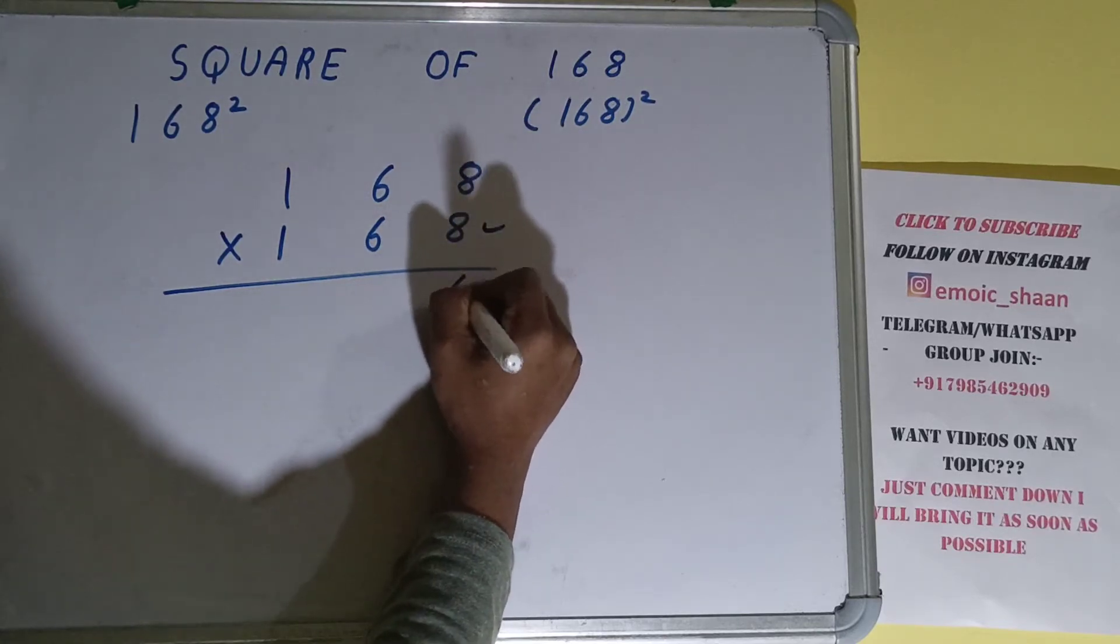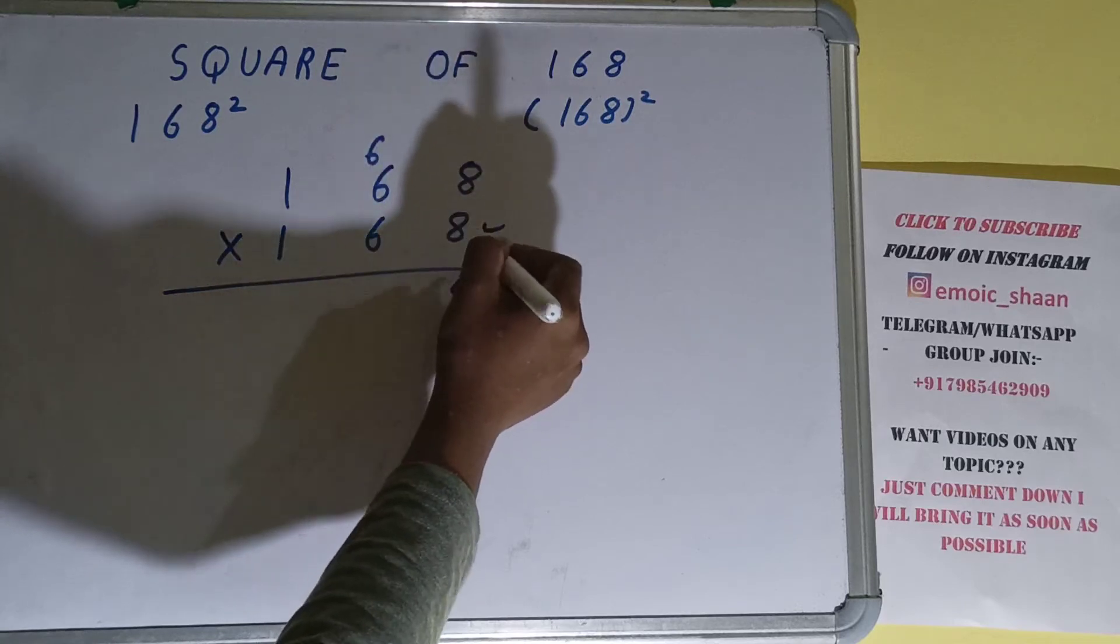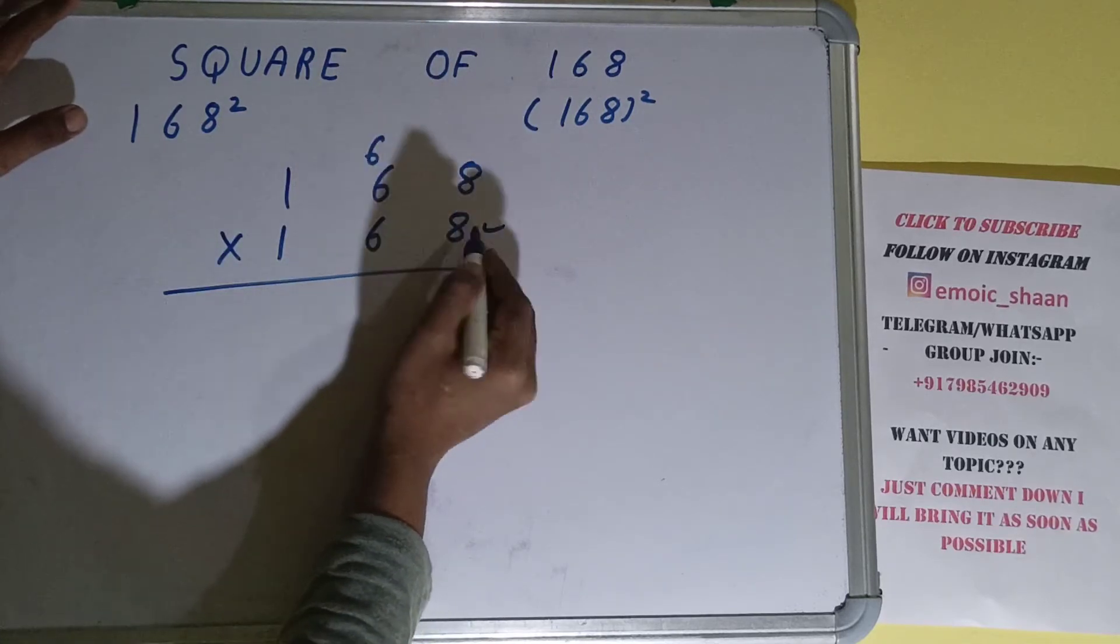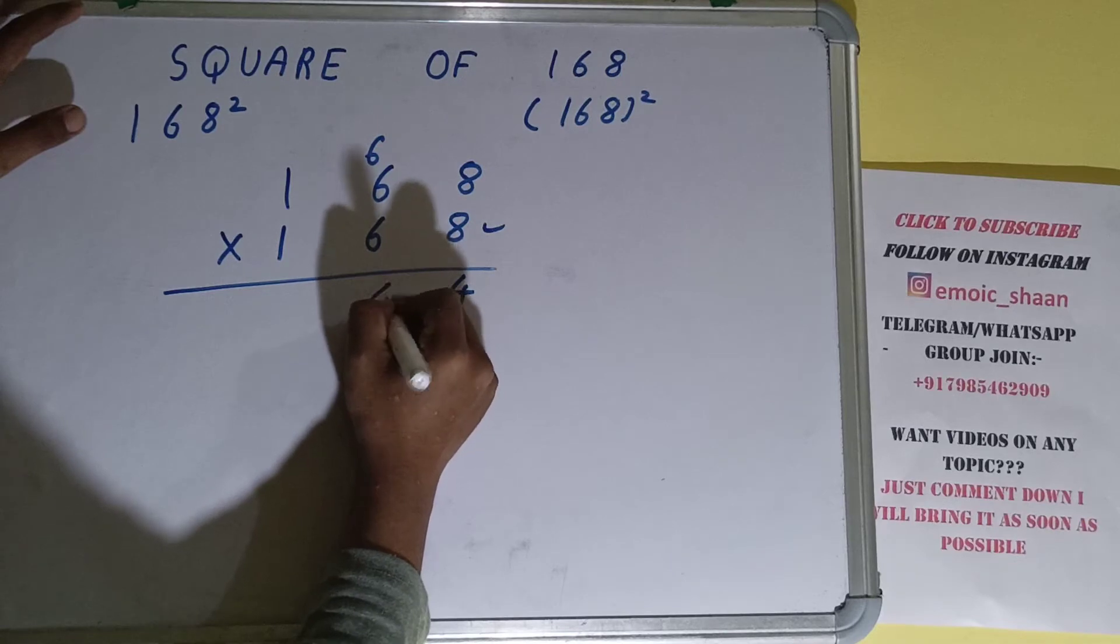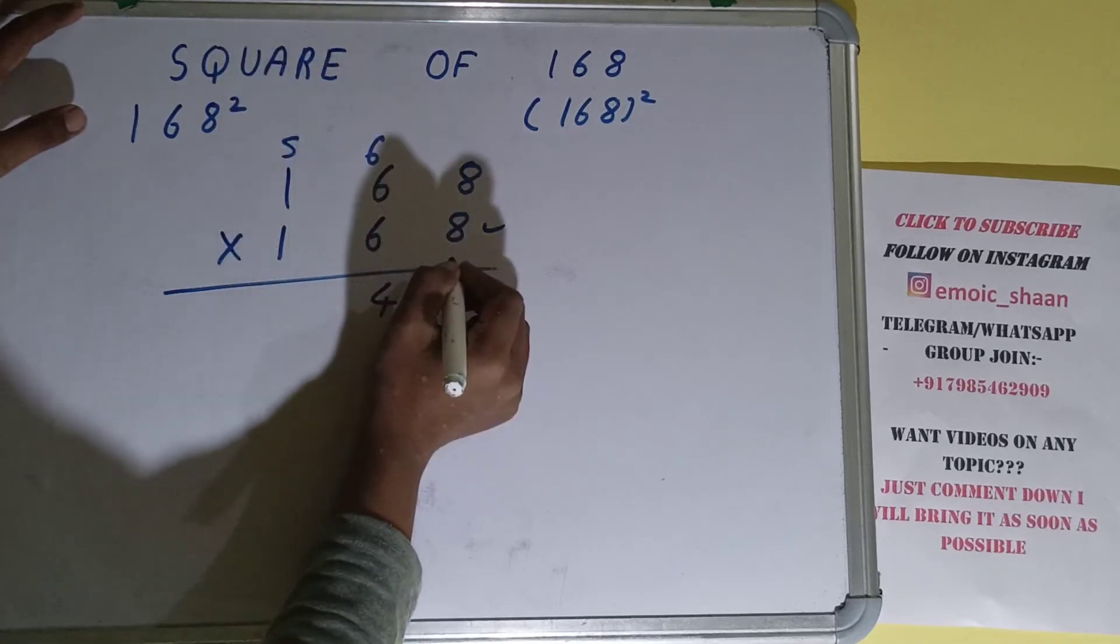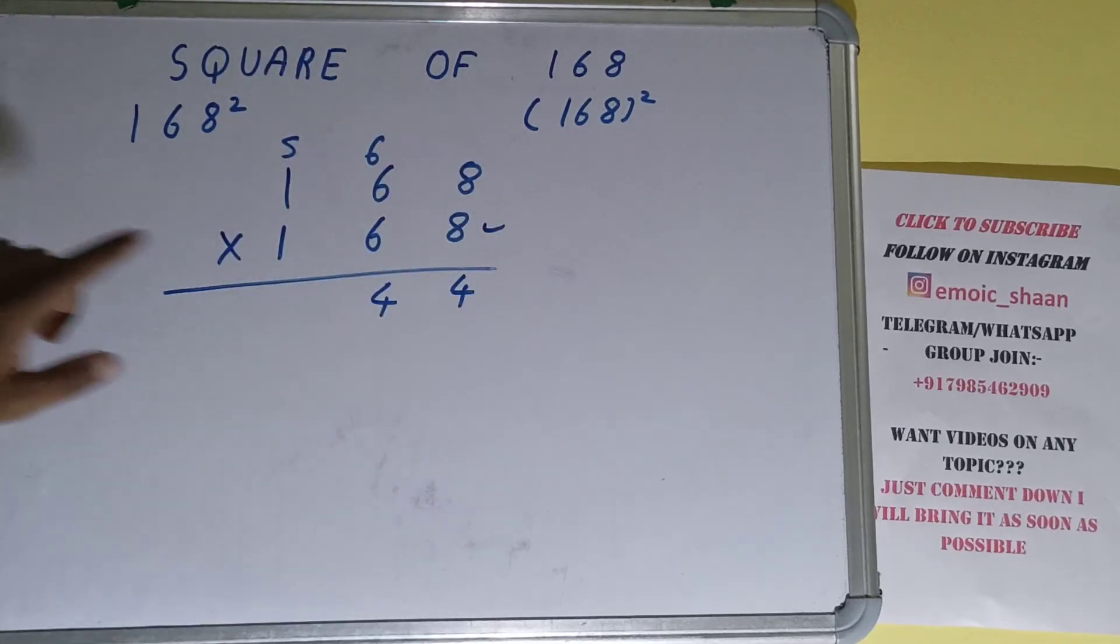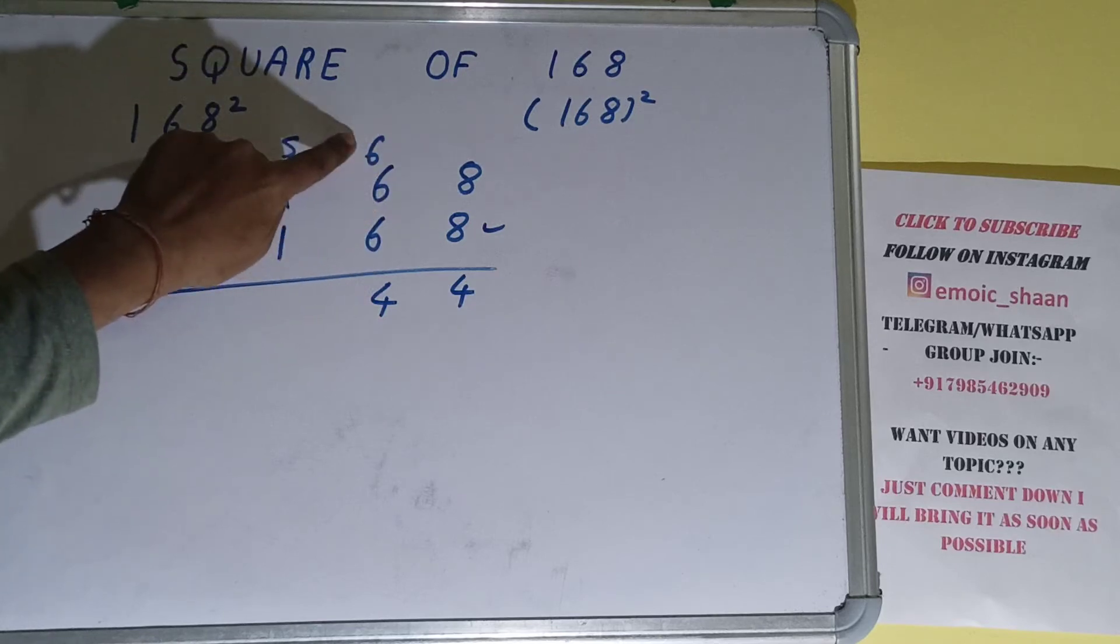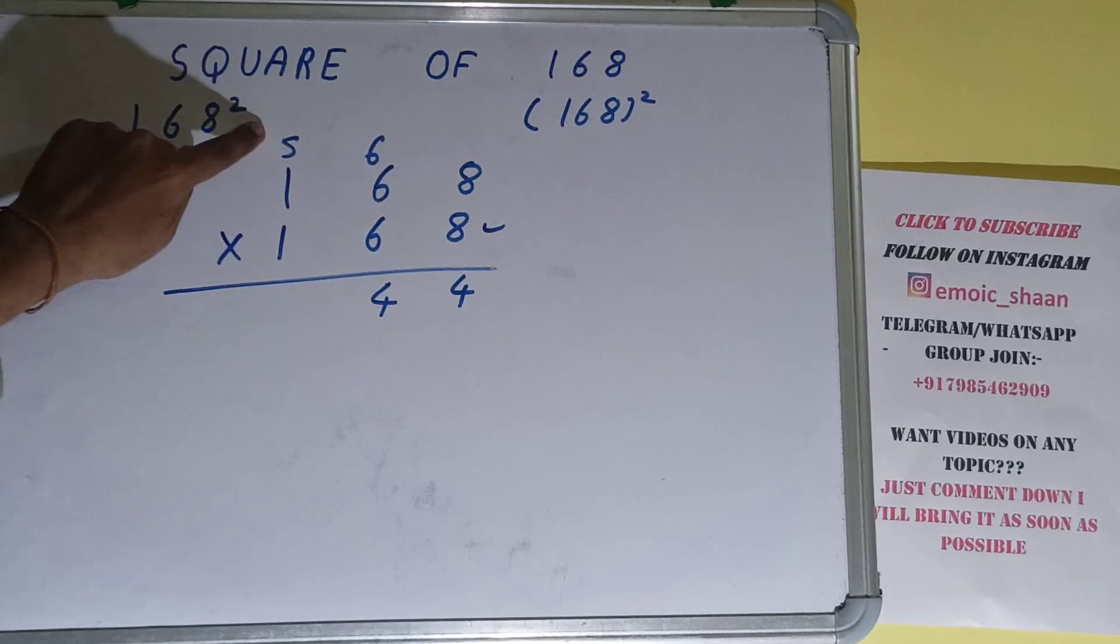times 8 is 64. 4 down, 6 carry. 6 times 8 is 48 plus 6 equals 54. 4 down, 5 carry. 6 times 8 is 48 plus 5 equals 53. 3 down, 5 carry. 1 times 8 is 8 plus 5 equals 13.